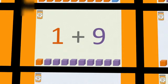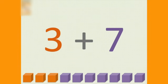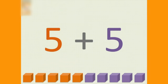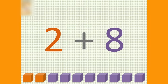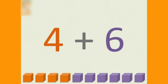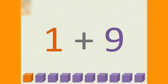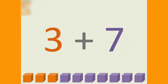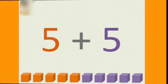Let's do somatic. One and nine, two and eight, three and seven, four and six, five and five. One and nine, two and eight, three and seven, four and six, five and five. And then we start again.